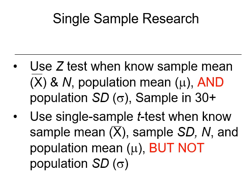As we transition from the z-test for single samples to the single samples t-test, let's do a quick reminder of when we'd use one versus the other. We use the z-test when we have a known sample mean — a mean from our sample, how many people were in our sample, a population mean, a population standard deviation, and that sample is over 30. If any of these are missing, we need to see if we have enough data to use the single samples t-test.